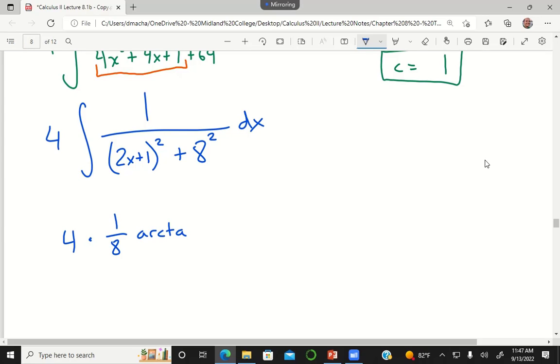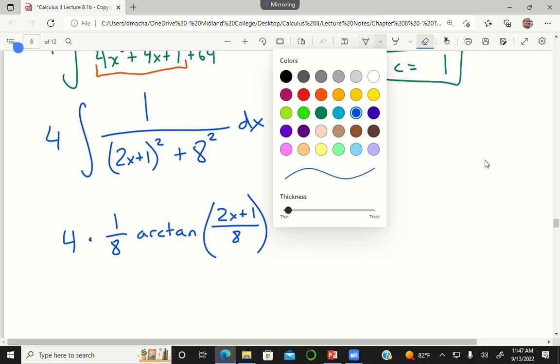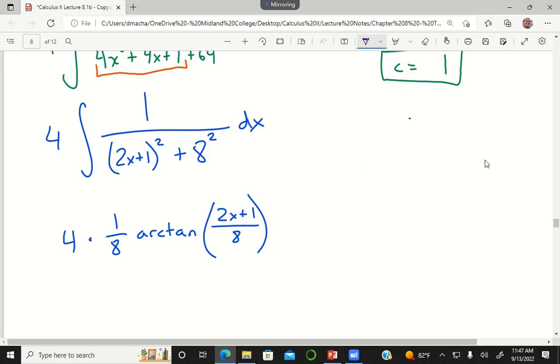I'm missing something. I should do a u sub just to be careful because I'm worried about that 2. If u is equal to 2x plus 1, then du is equal to 2 dx.